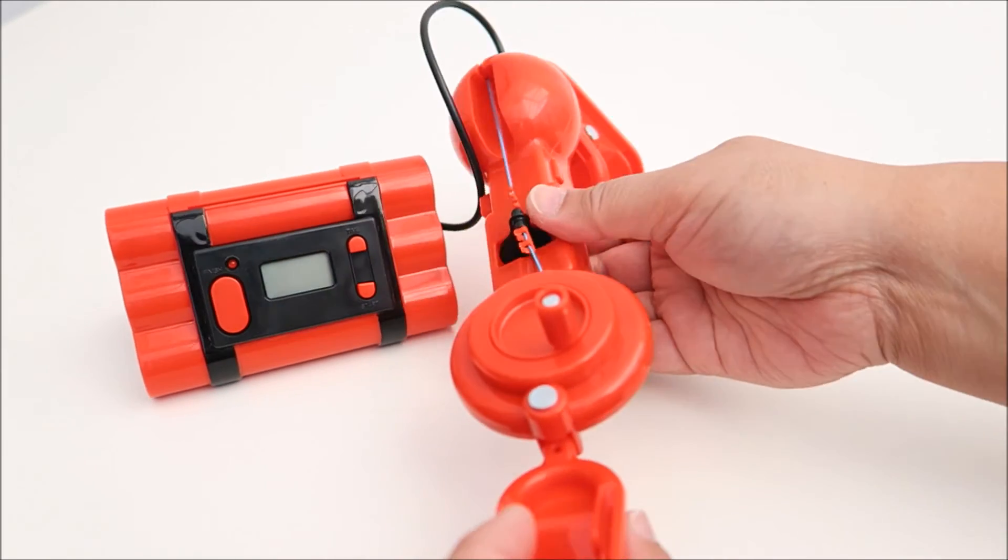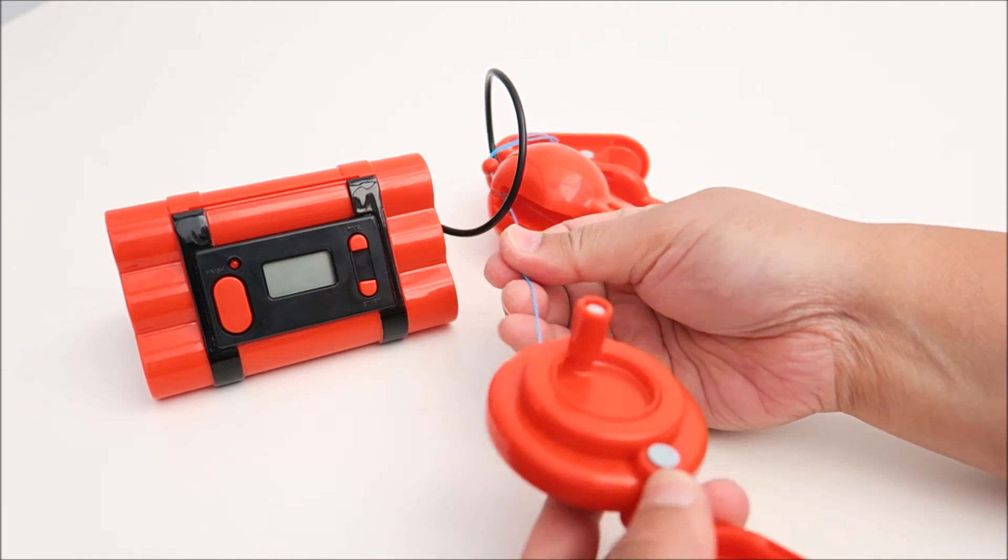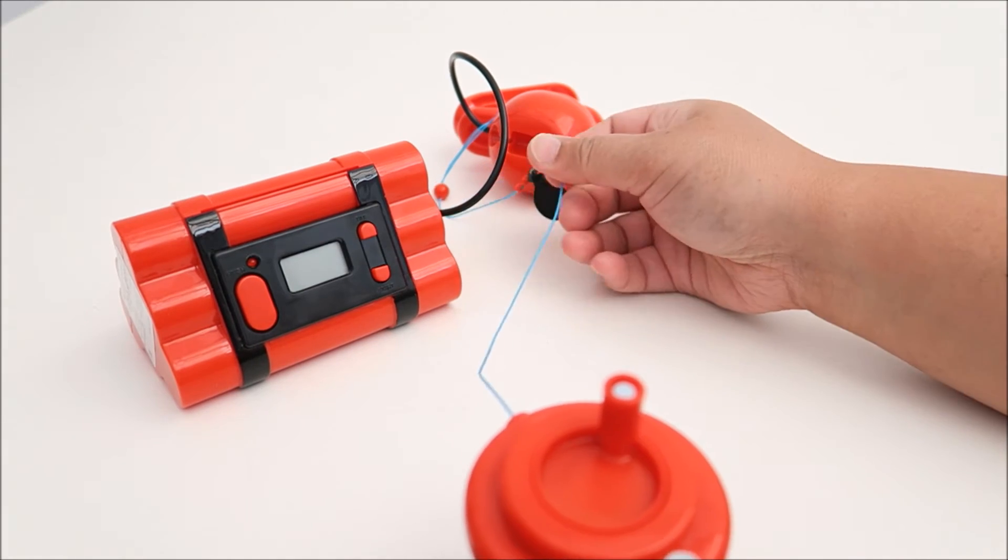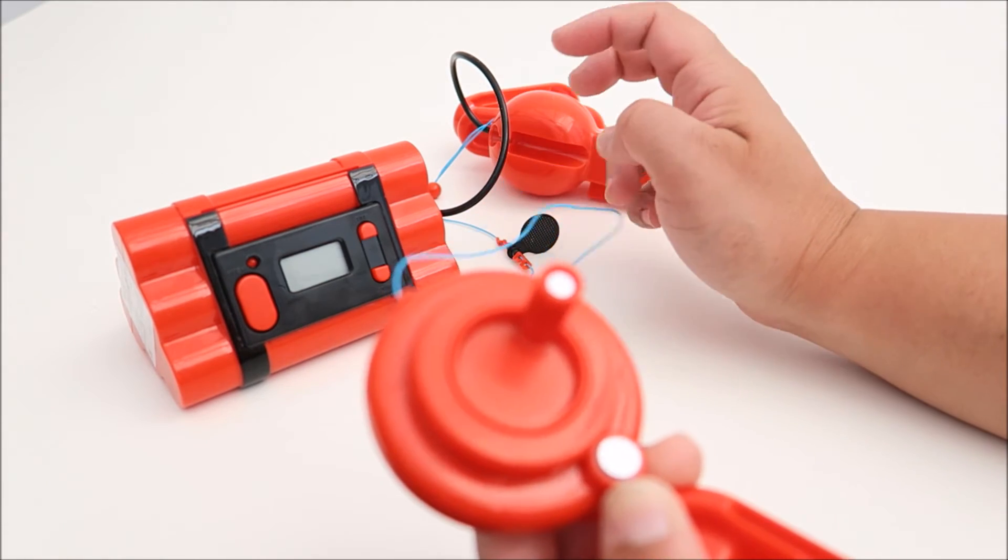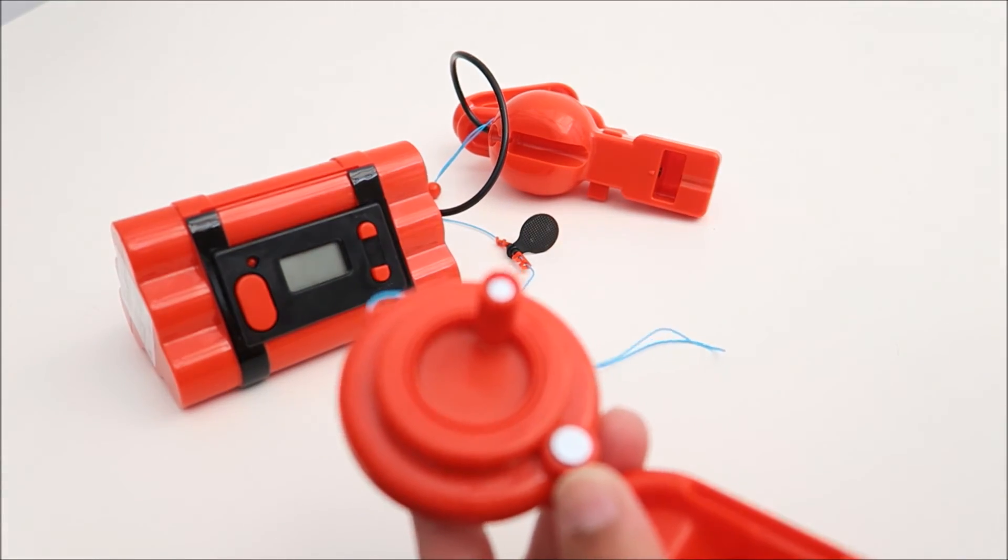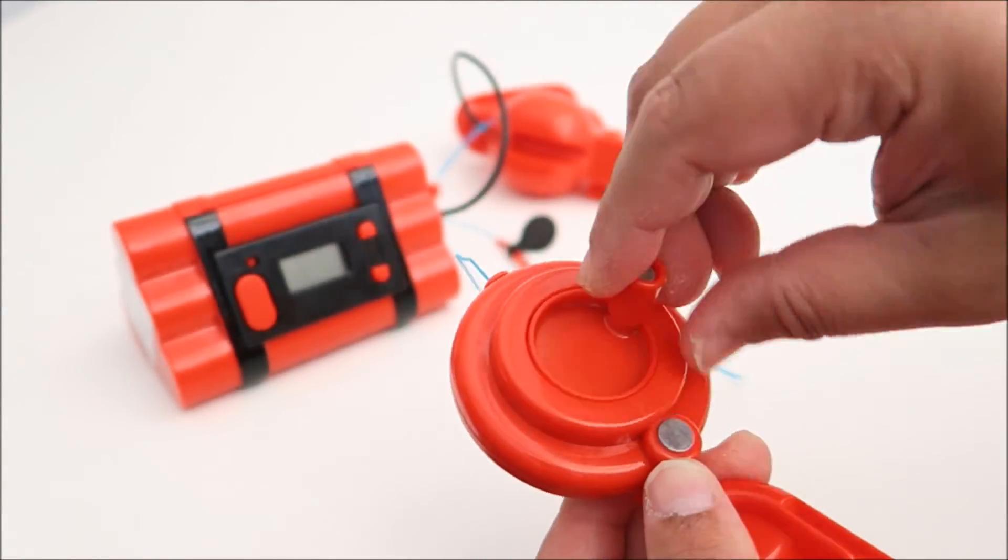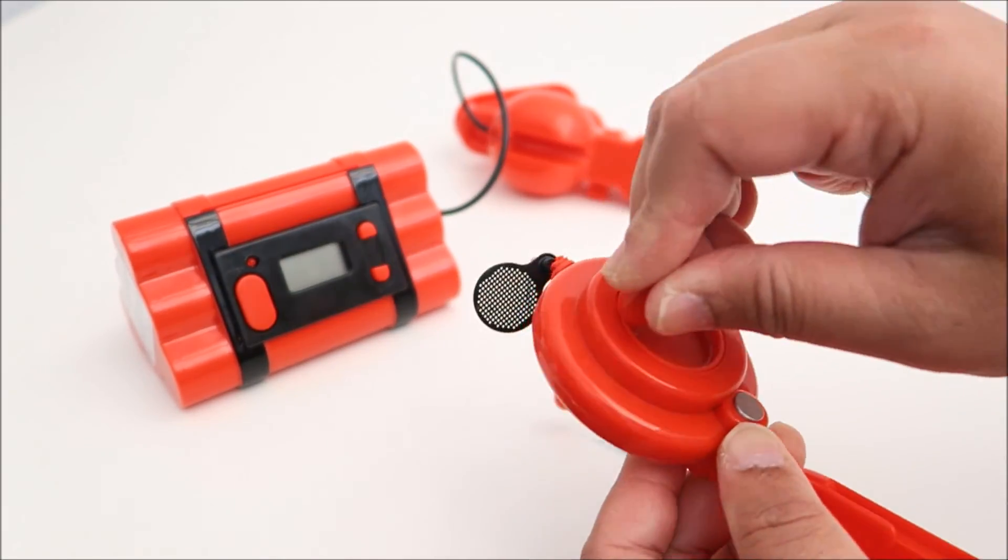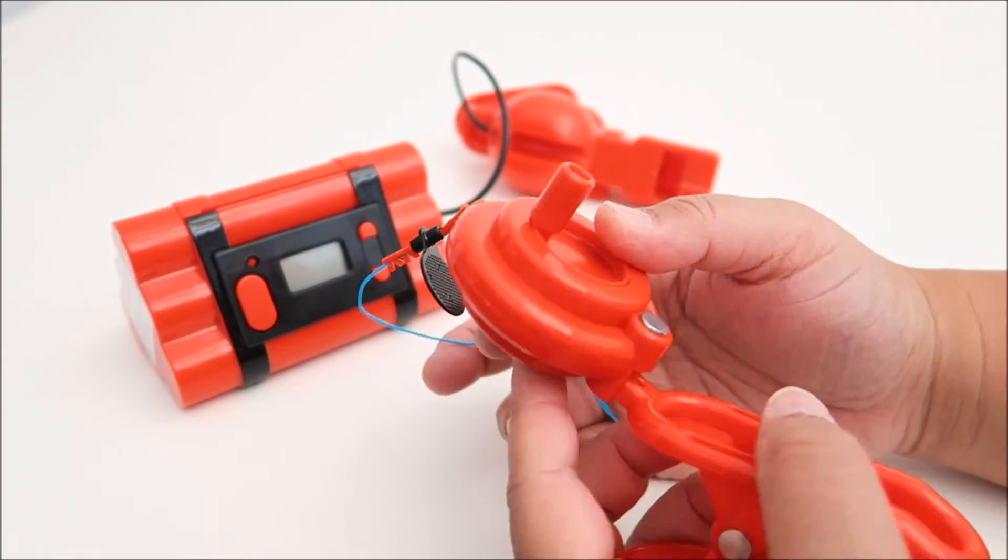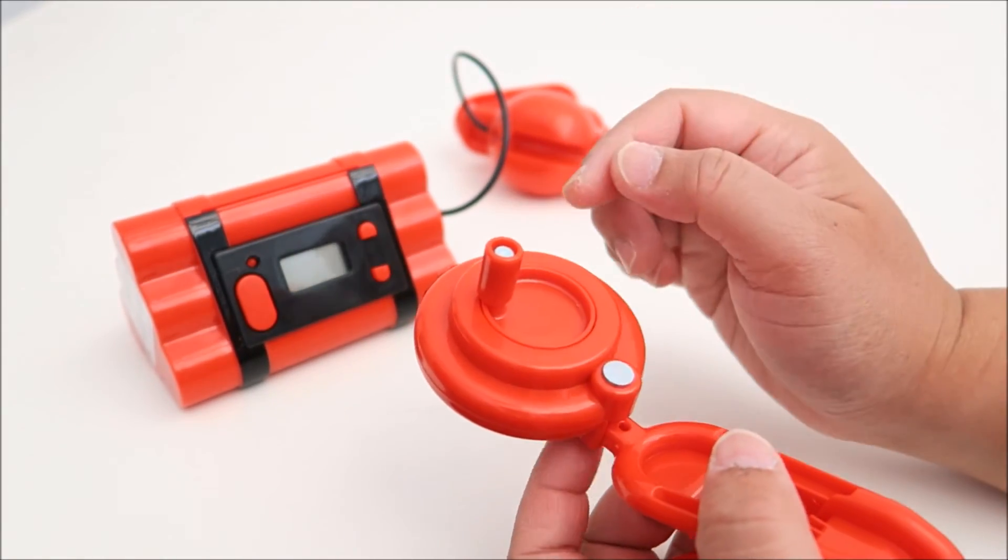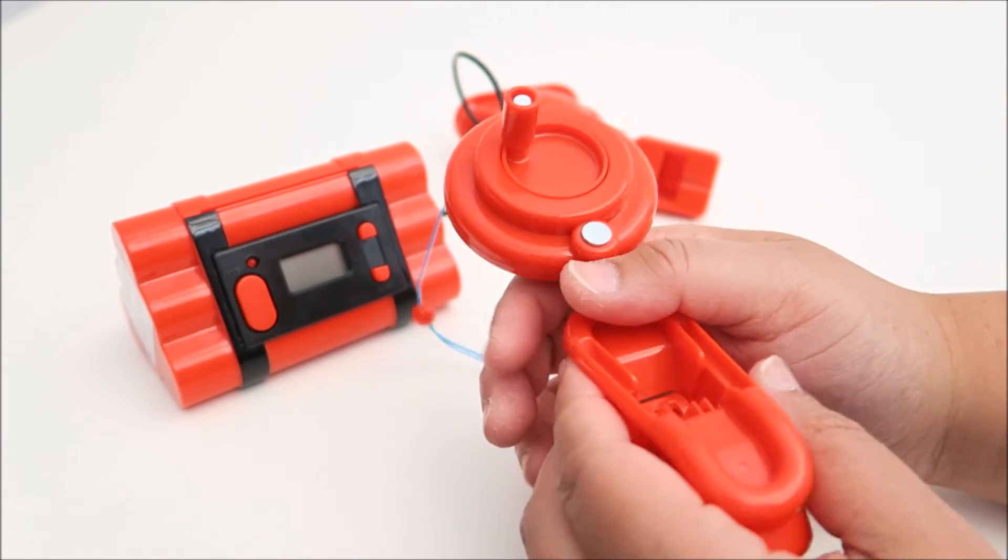And then from there, you continue pressing the button on the bottom and then pull the string and then hook it onto the clamp. So when you want to keep it away, you have to roll it yourself. This does not have an automatic button to press to keep the string. You have to manually rotate your string.